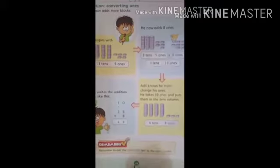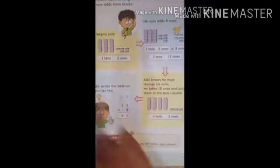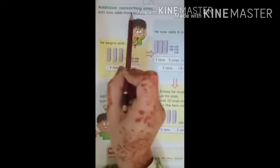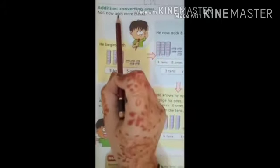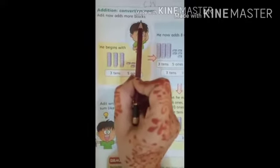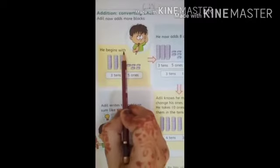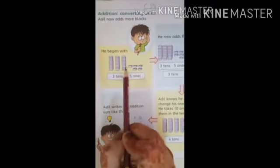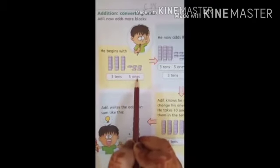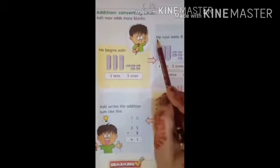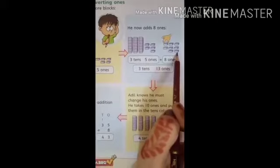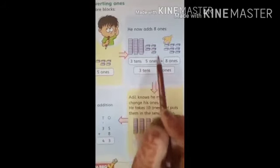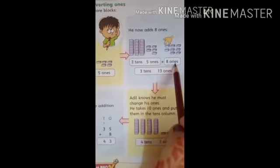Look at page number twenty-nine. Addition. Converting ones. Adil now adds more blocks. Adil ab add karega mazid blocks. He begins with - wo start karta hai - three tens and one, two, three, four, five ones. He now adds eight ones. Ab woh mazid is mein eight ones jo hai, woh add kerta hai. One, two, three tens and five ones plus eight ones, count.